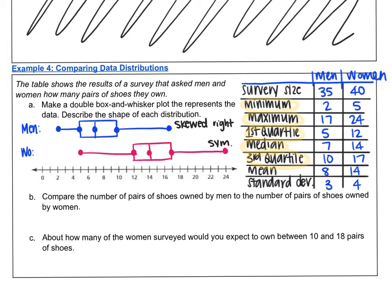Now let's answer the questions. Compare the number of pairs of shoes owned by men to the number of pairs of shoes owned by women. I want to look at these two box and whiskers plots and compare them. Is one more spread out than the other? Is one shifted more? I do notice that in general, the box for women, which contains most of the data—remember this contains 50% of the data—is higher than the box for men. So most of the women's data is higher. In general, women own more shoes. There's also more variability. This goes all the way from five to 24, whereas men only goes from two to 17. So in general, women own more shoes and there's more variability.